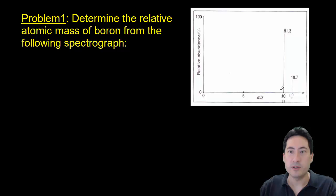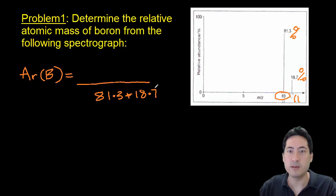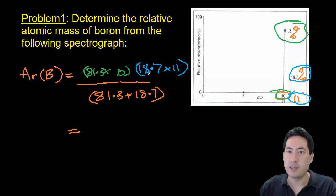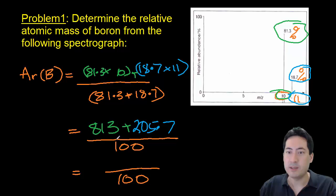Moving on to the first problem, determine the relative atomic mass of boron from the following spectrograph. You'll get a graph that looks just like this and it'll be broken up from 100%. So 81% was the 10, 18.7% was the 11. You're just trying to work out what the relative atomic mass of the average of the isotopes are. So you grab the largest one, 81% times that by what it is, which is 10, and you grab the smallest one, 18% times that by what it is, and divide it by the total percentage there, and you end up with 10.2.